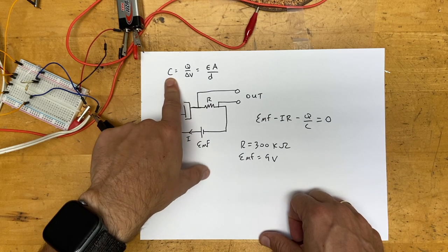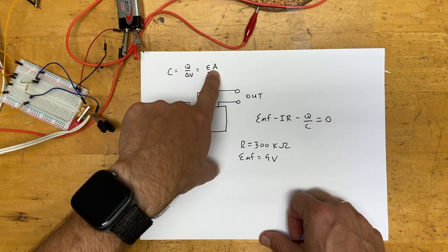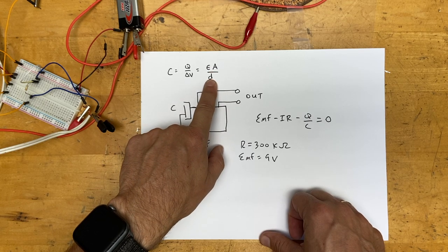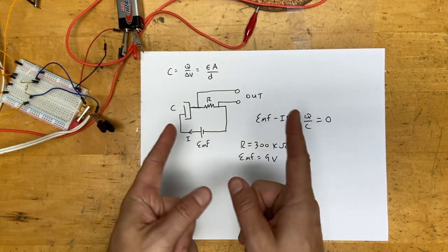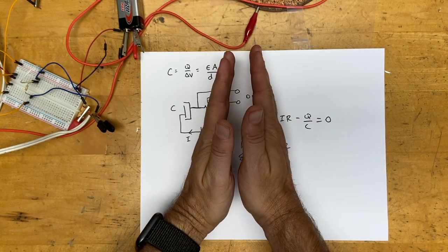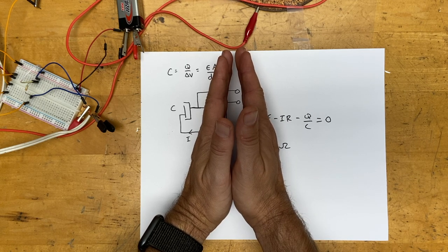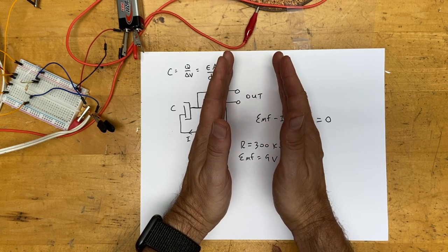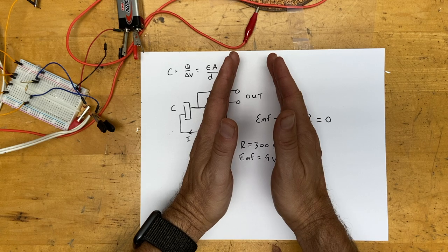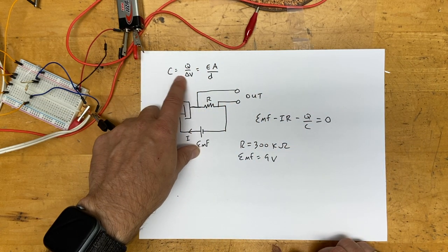If I have two parallel plate capacitors and I push them closer together I will change the capacitance. If I pull them further apart I will change the capacitance. So we're going to record audio by changing the capacitance of a capacitor.